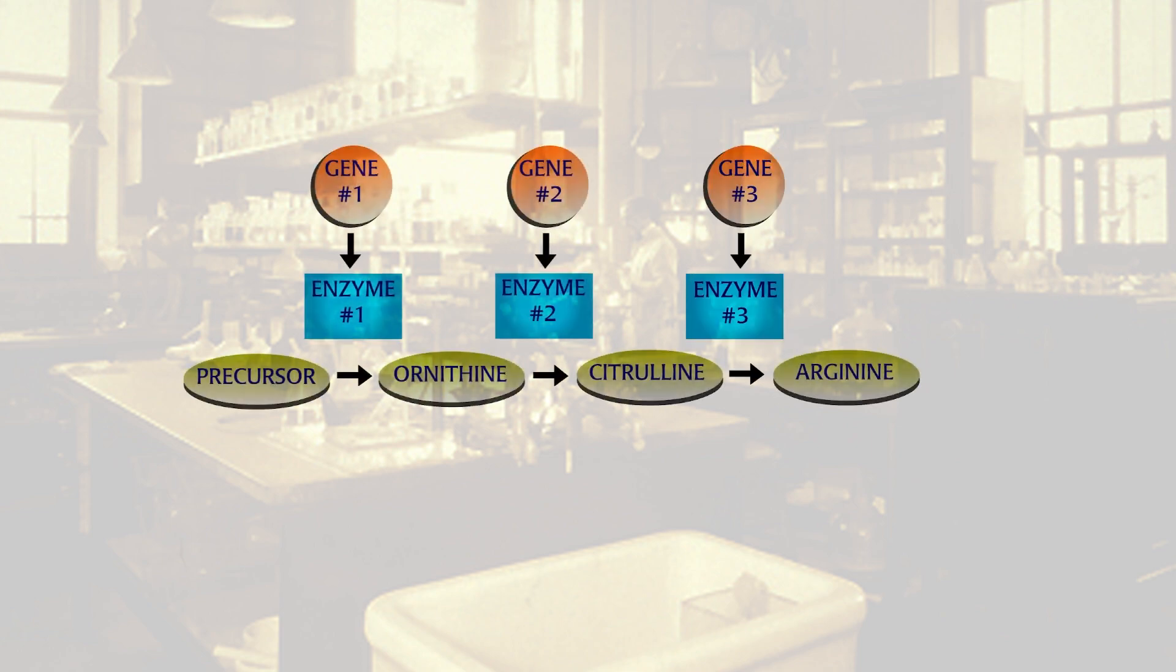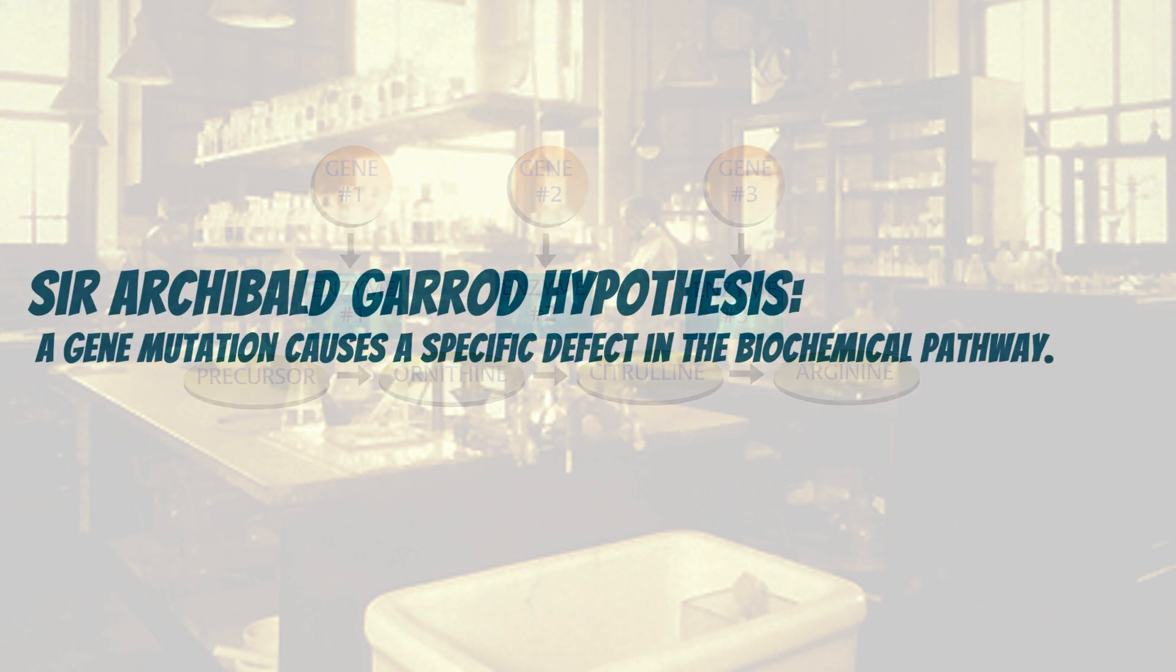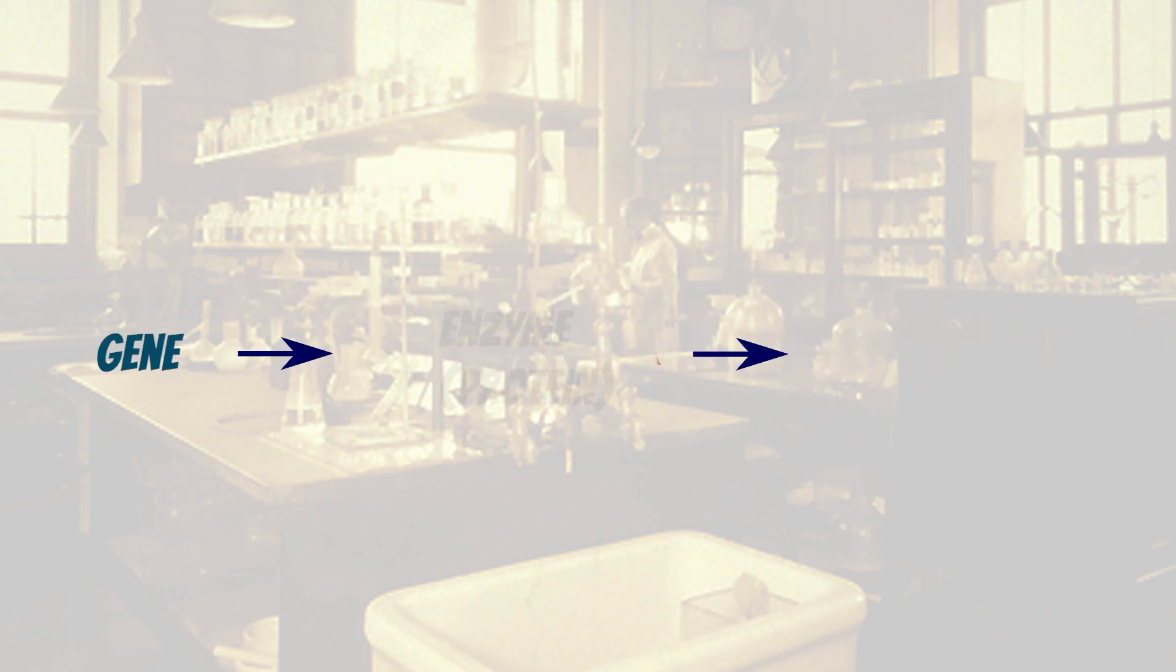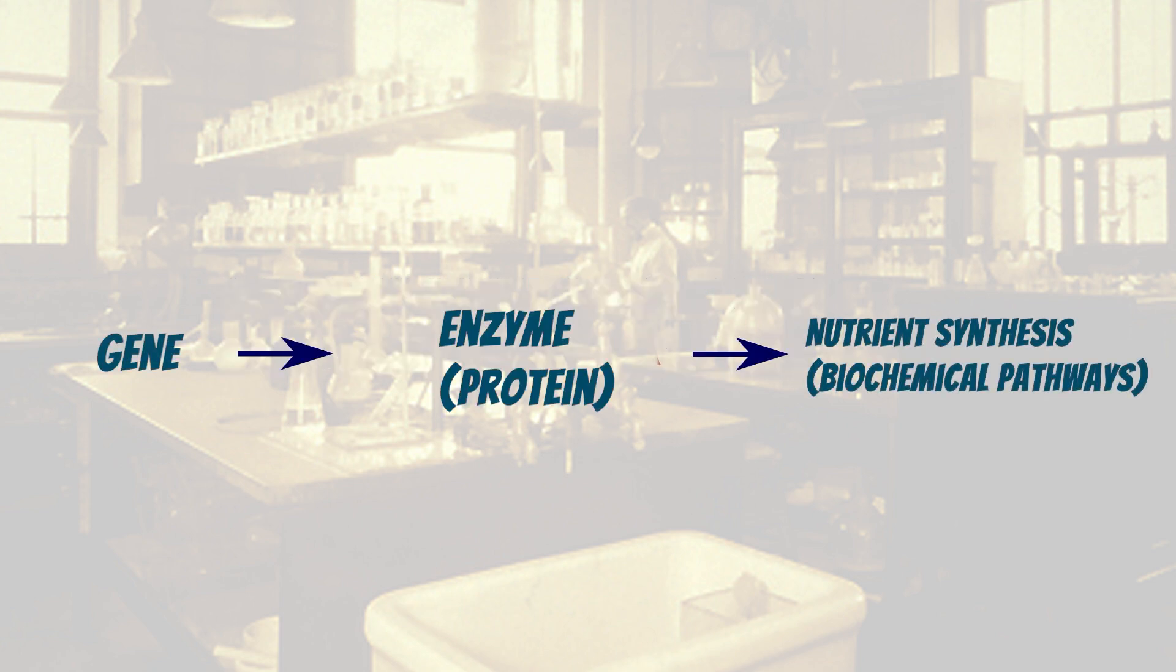They had biochemical proof of Sir Archibald Garrett's 1908 proposal of the Inborn Errors of Metabolism, who proposed that a gene mutation causes a specific defect in the biochemical pathways. Beadle and Tatum reasoned that each mutation must inactivate the enzyme needed to synthesize the nutrient. One gene carries the directions for making one protein.